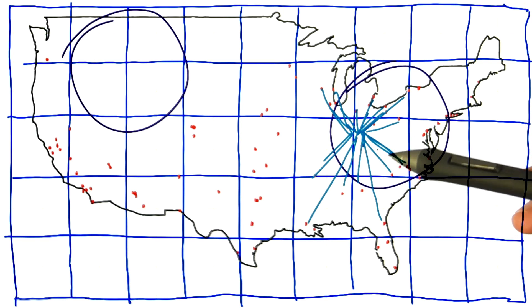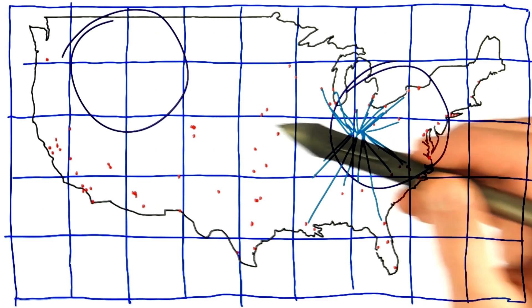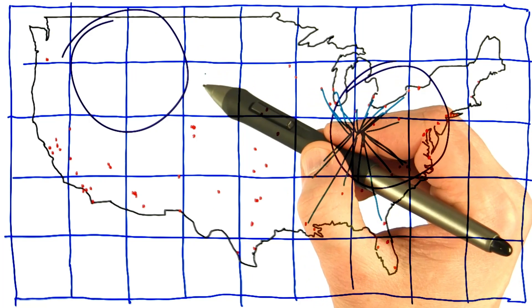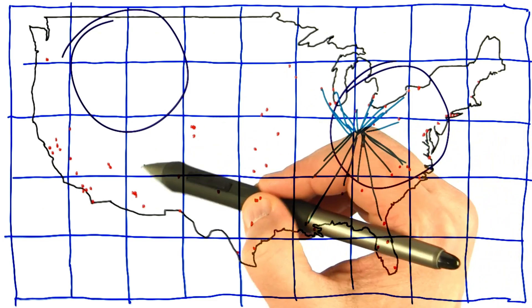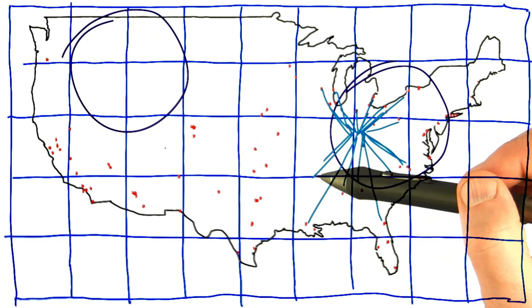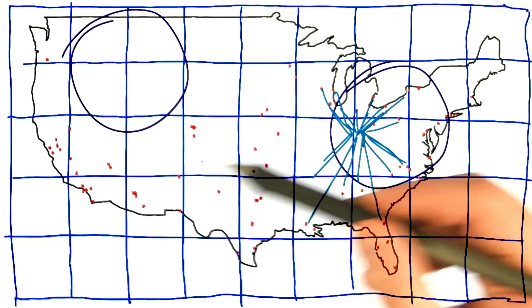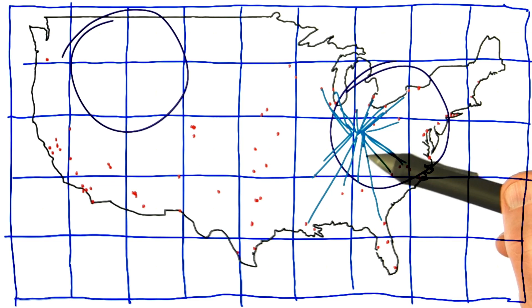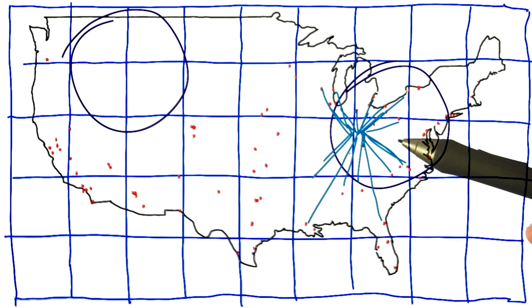while other threads that are in the same warp or the same block might be responsible for a city in one of these grid cells and have a lot less work to do. And so it'll complete quickly and sit around waiting for these long-running threads. This is a classic example of load imbalance.